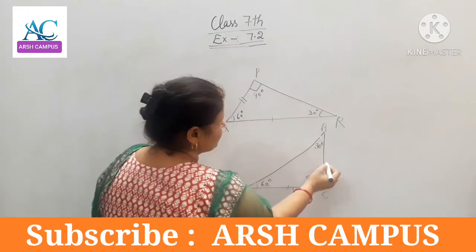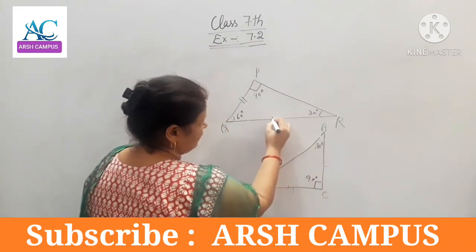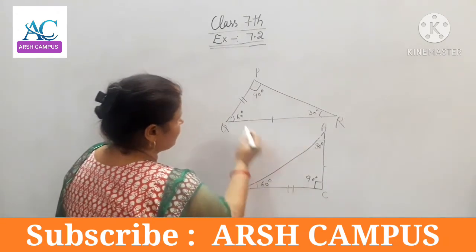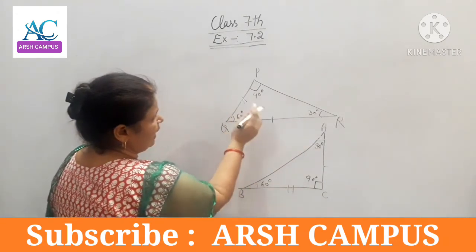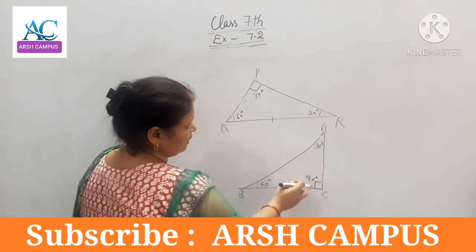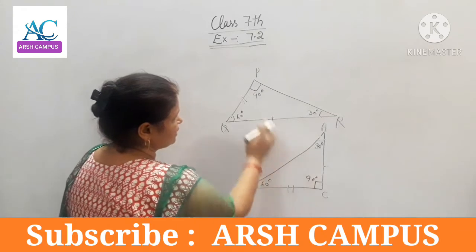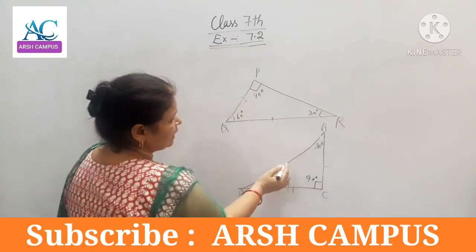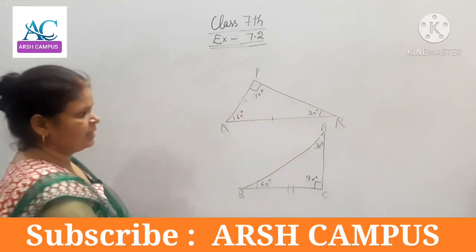This side is equal to this side. This side is equal to this side. The angles are equal and two sides are equal. That is, this side equals this side, and this side equals this side. But this side is not equal to this side.